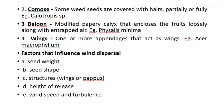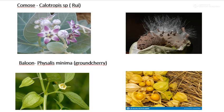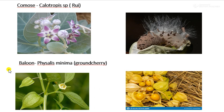Another structure is the wing — one or more appendages that act as wings. The picture shows the comos structure of Calotropis species, locally known as 'rui': the first image is the flowering stage and the second is the seed structure. The balloon structure is shown for Physalis minima, locally known as ground cherry, along with its seed structure.